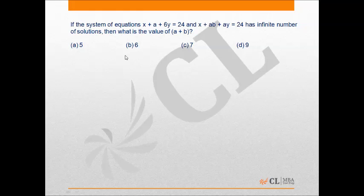So, again a round one question. The system of equations is x plus 6y plus a minus 24 equals 0 and x plus ay plus ab minus 24 equals 0.